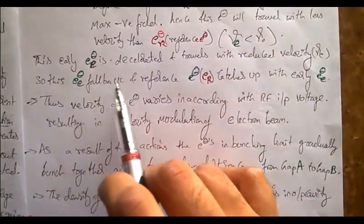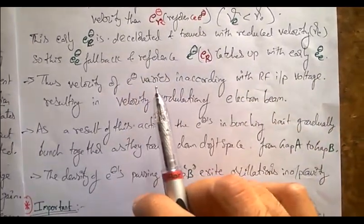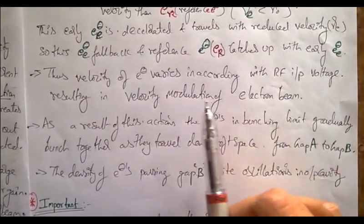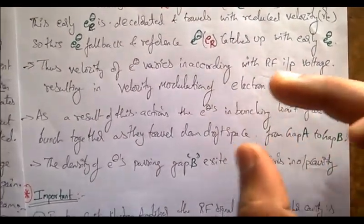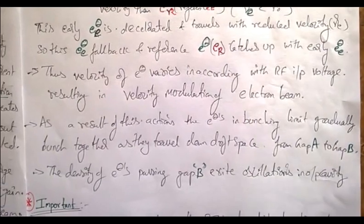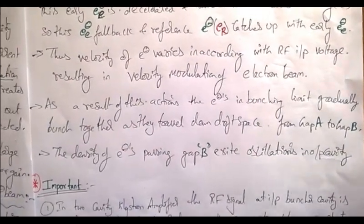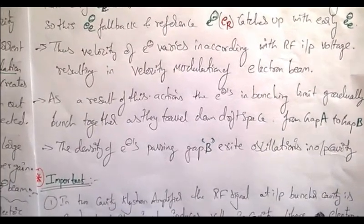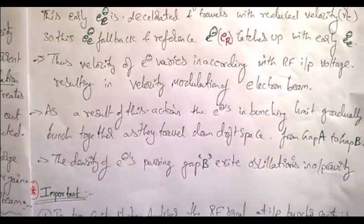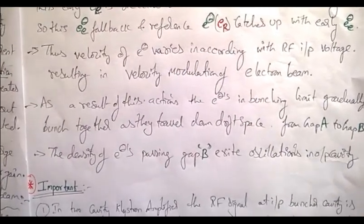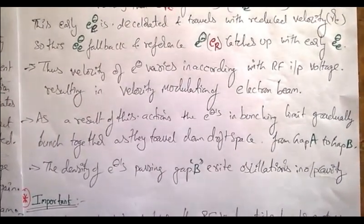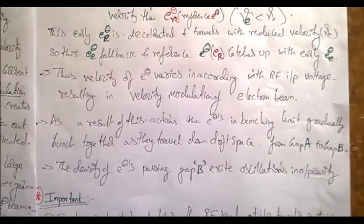The early electron falls back and the reference electron catches up with it. Thus the velocity of the electrons varies according to the RF input voltage, resulting in velocity modulation of the electron beam. When all three electrons finally reach the catcher cavity, they get bunched — they come to a single point — and with the increased strength, the electrons traveling with high velocity induce oscillations in the catcher cavity.